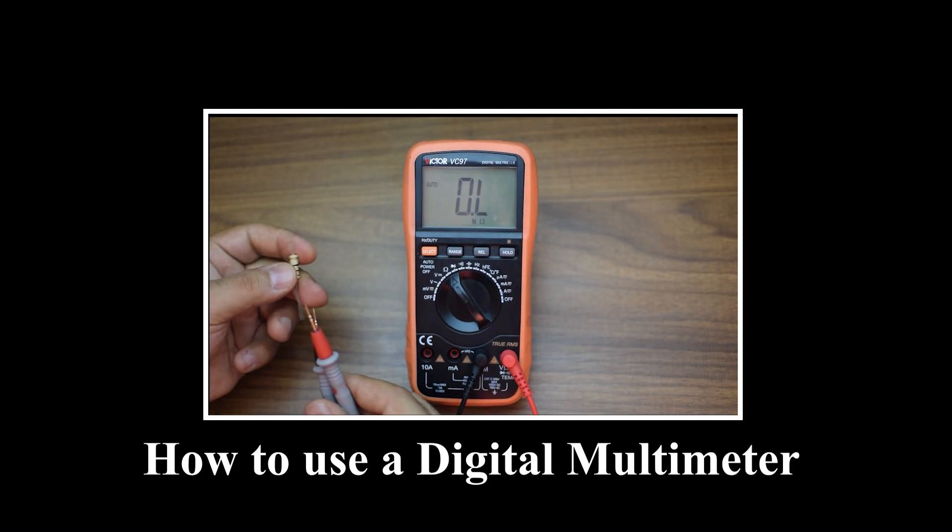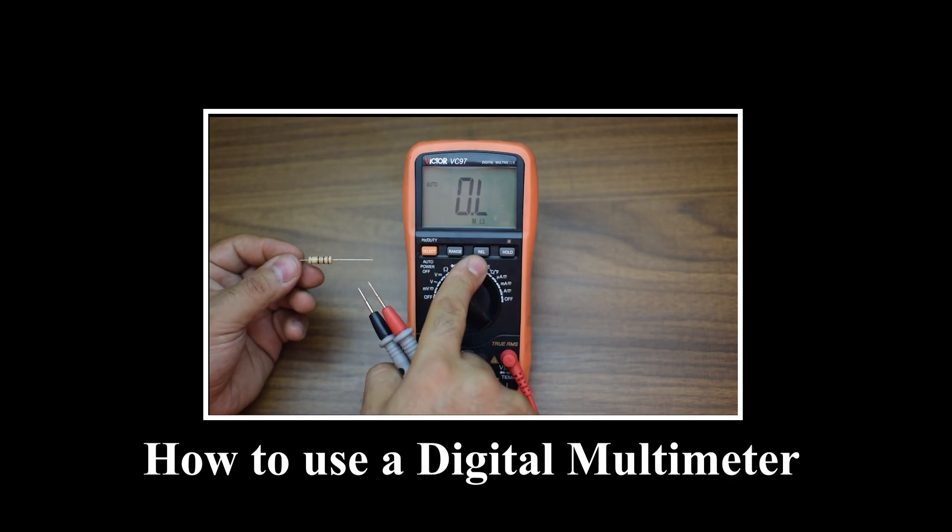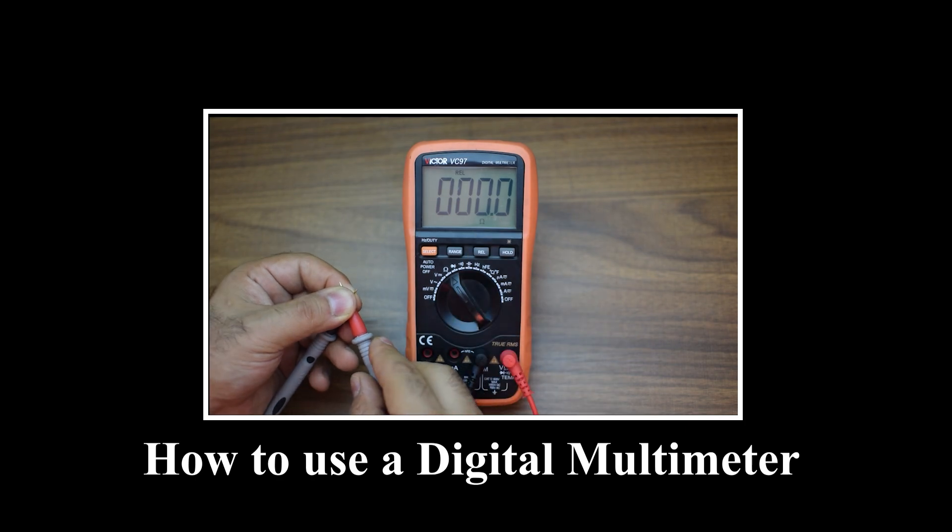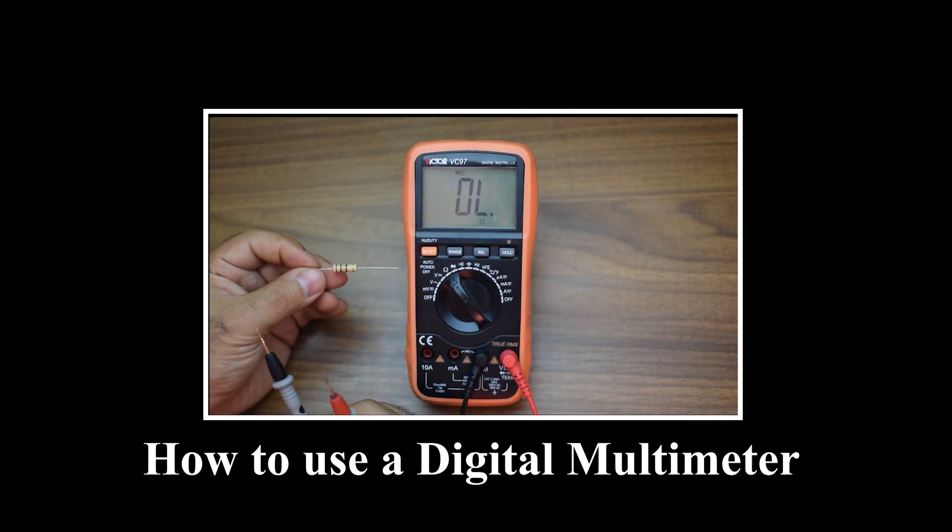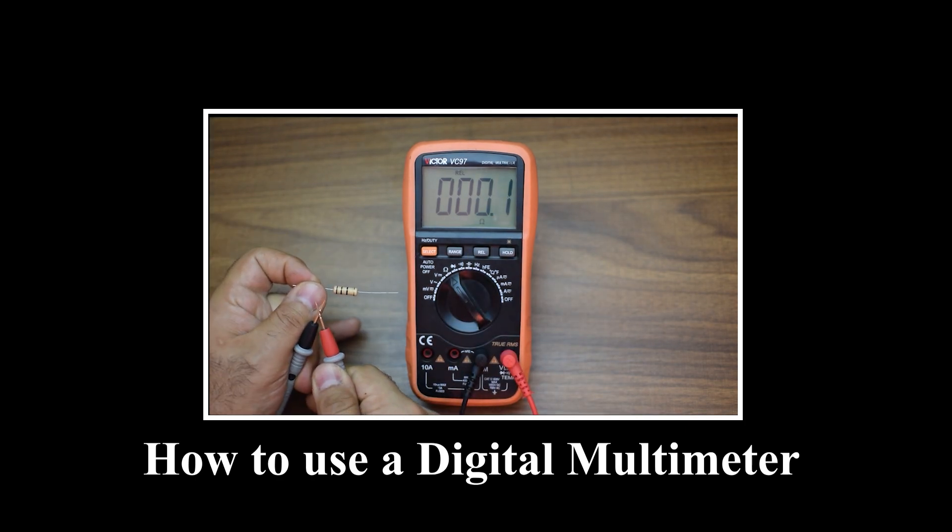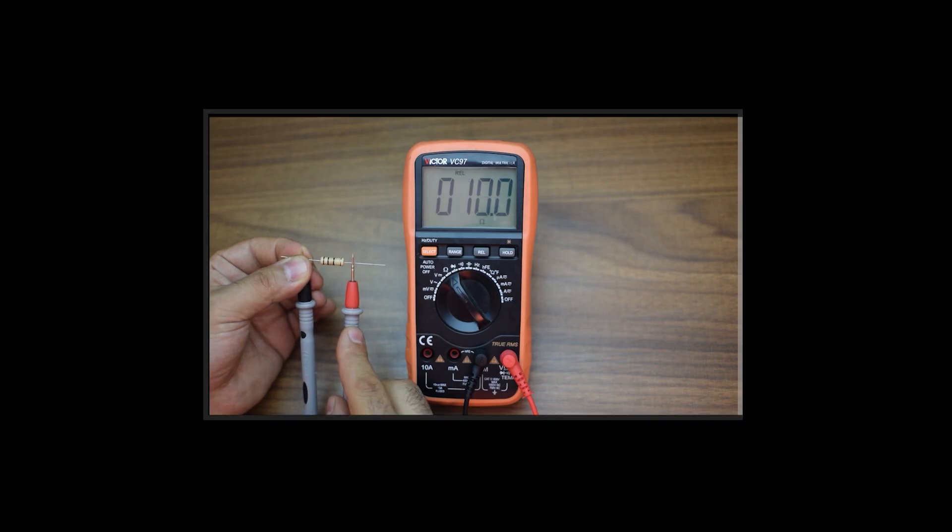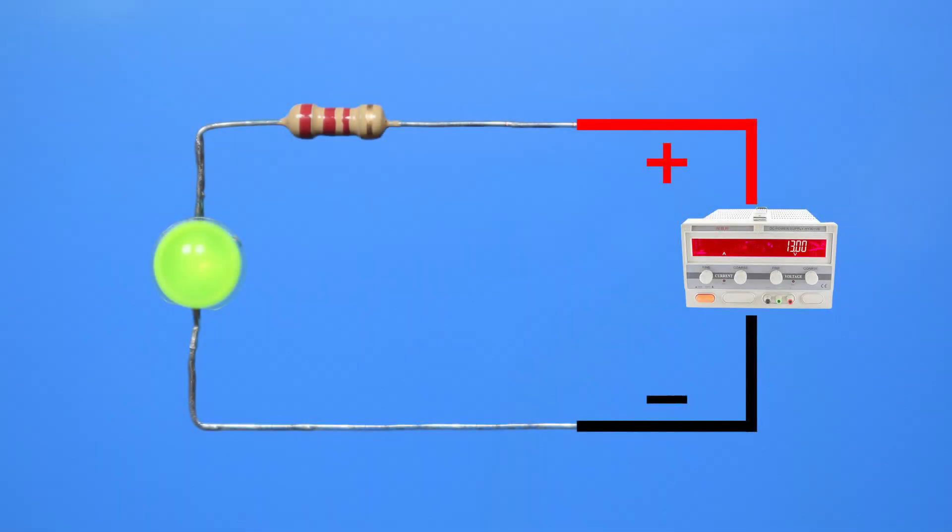We measure the power supply voltage and the resistor value with a multimeter so we can use them in our calculations. You can check a full tutorial on how to use a multimeter to measure voltage, current, and resistance in my previous video. We measure the exact value of the resistor. The resistor measures 2200 ohms, which exactly matches its nominal value.